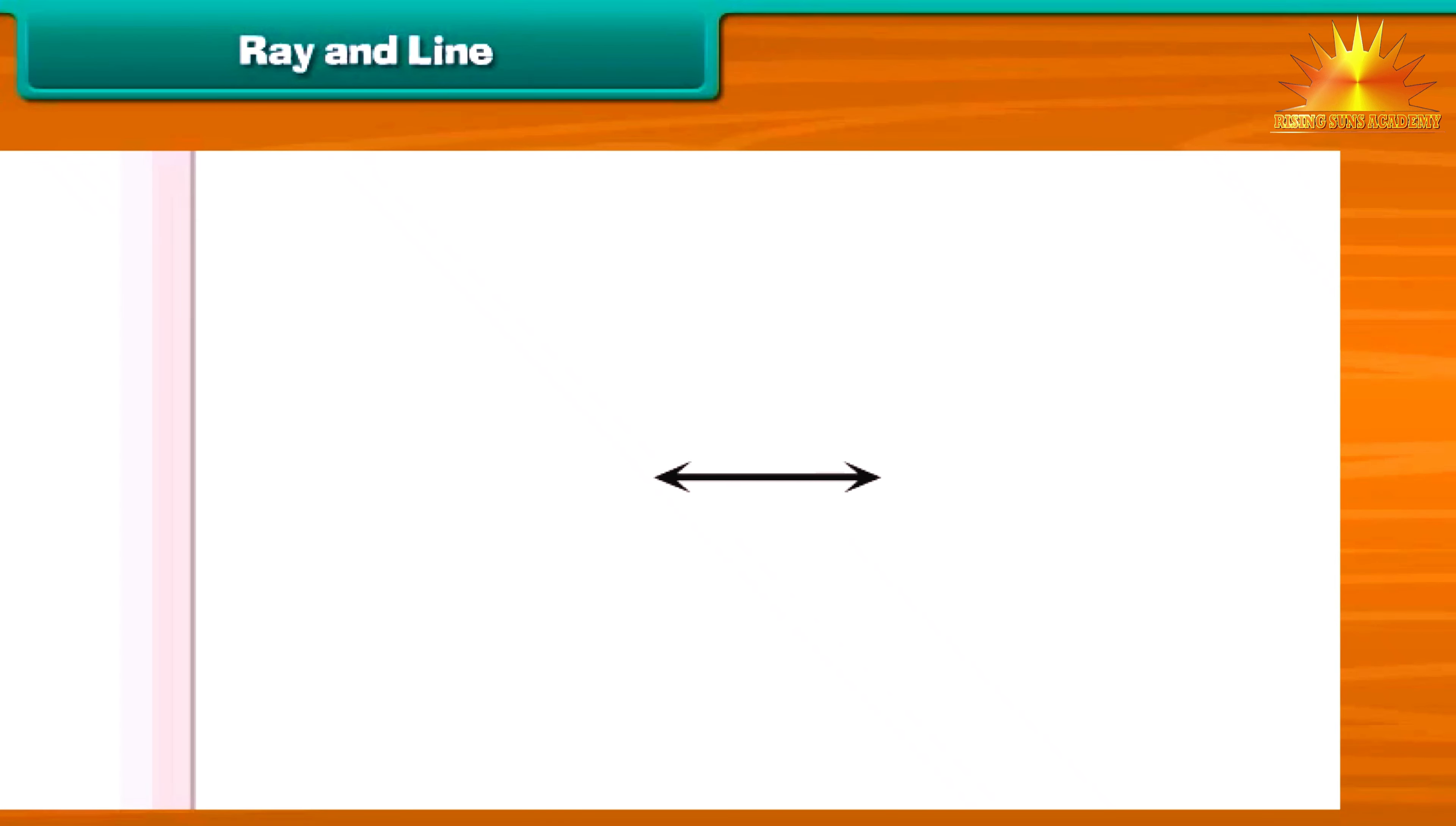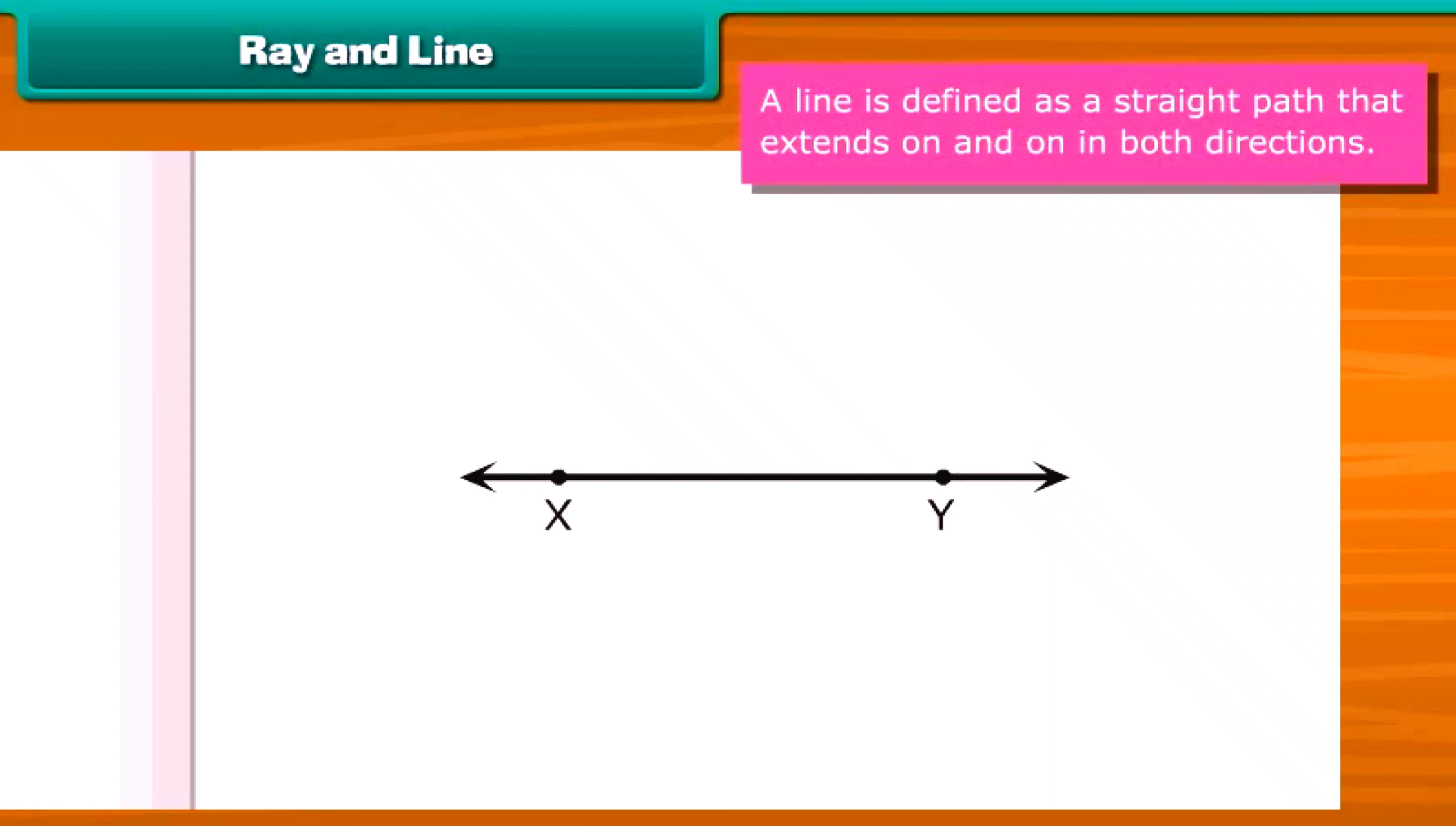What if a straight path extends on and on in both directions? This becomes a line, for example line XY. Thus a line is defined as a straight path that extends on and on in both the directions.